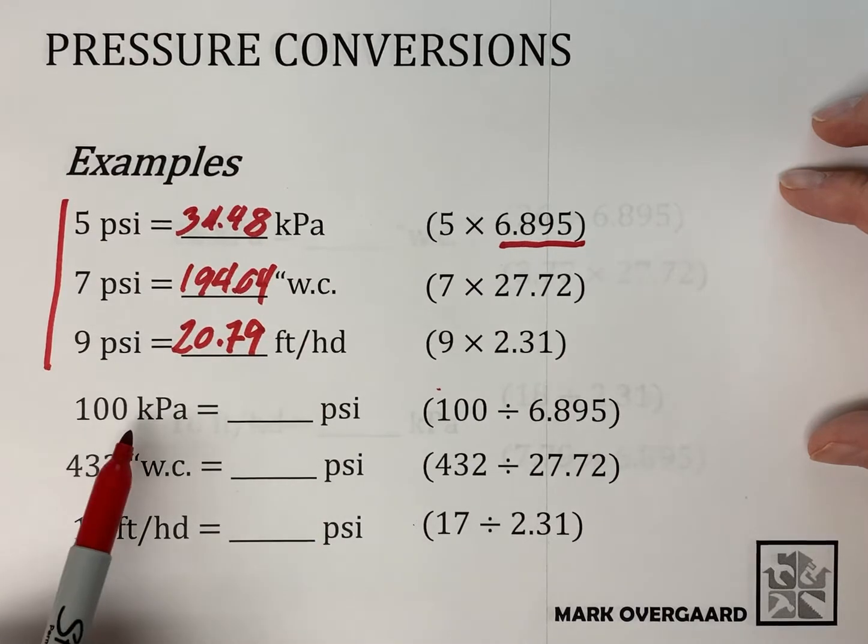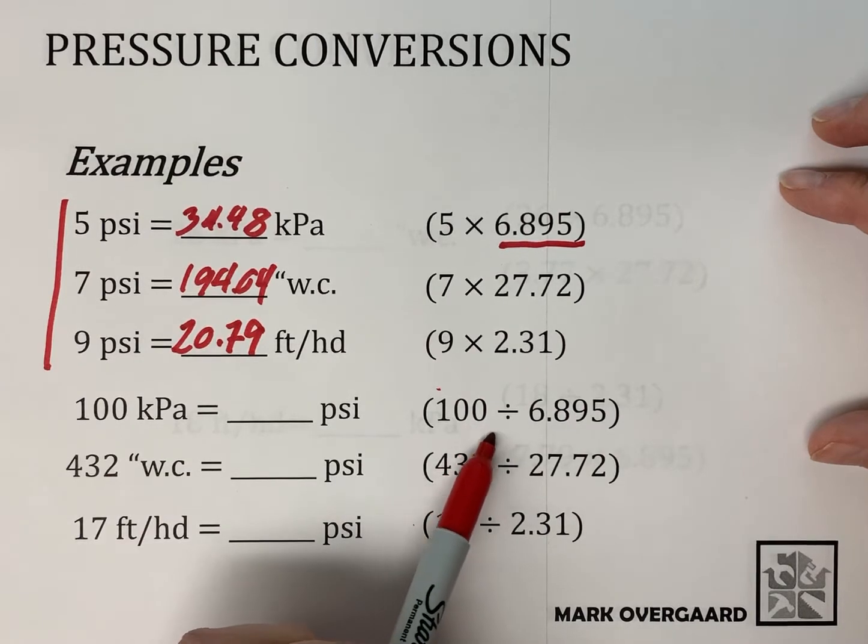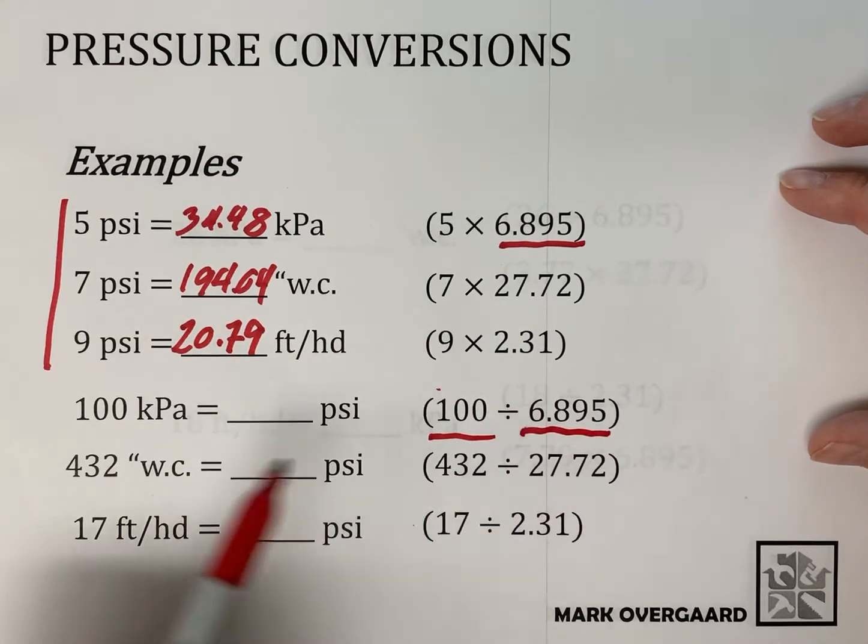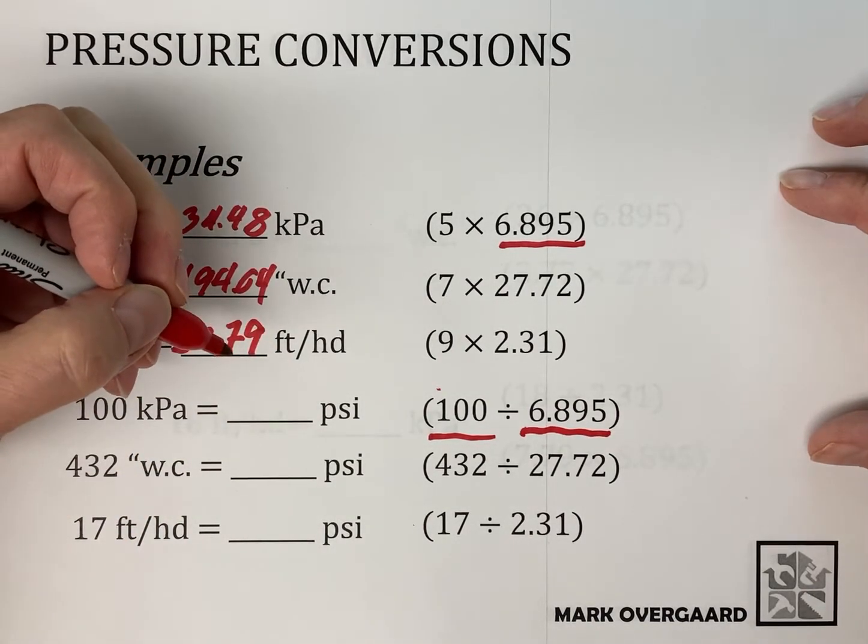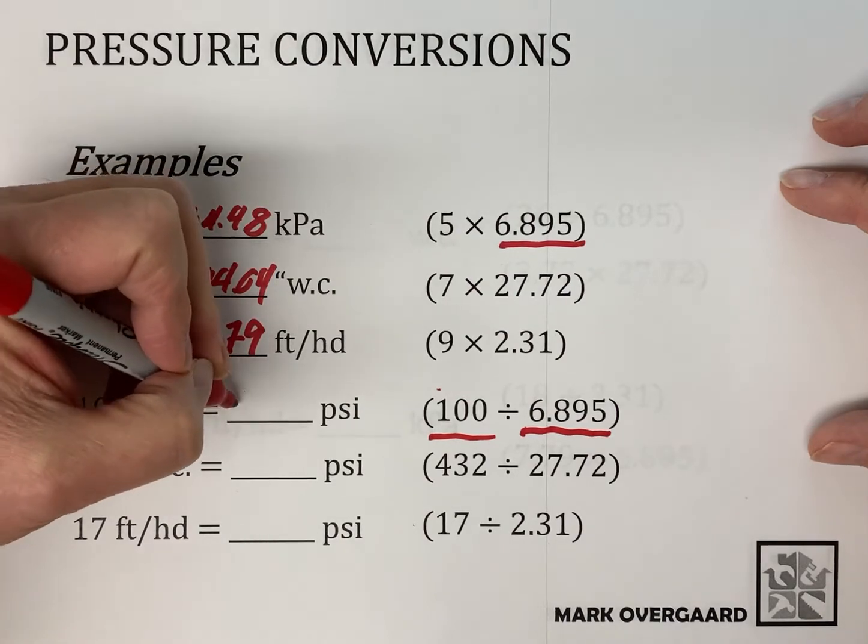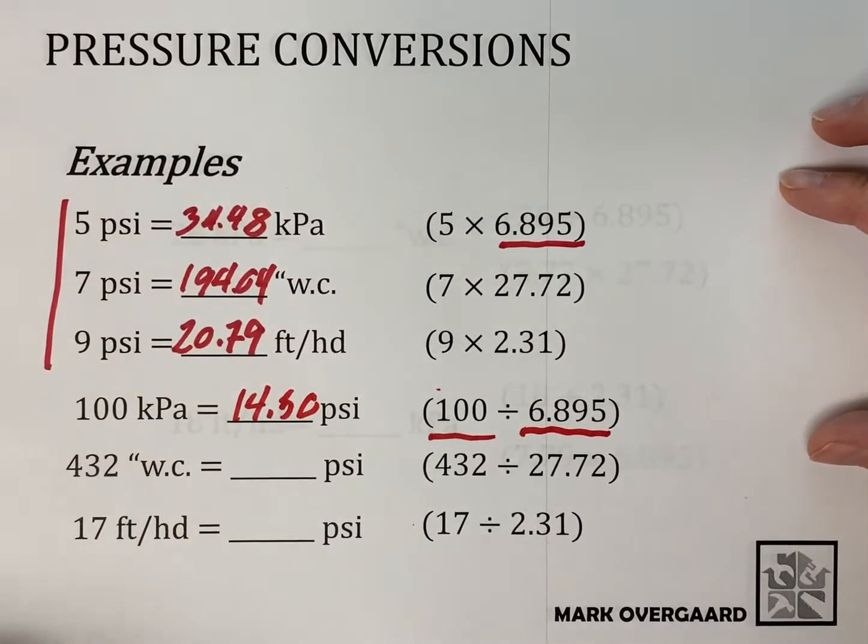Now let's do the reverse where we have a kPa, water column, and feet of head. What do we do? Well, we just divide. We take the number of kPa we have and divide it by the number we need for one PSI. So we're going to get here 100 divided by 6.895 is 14.50.